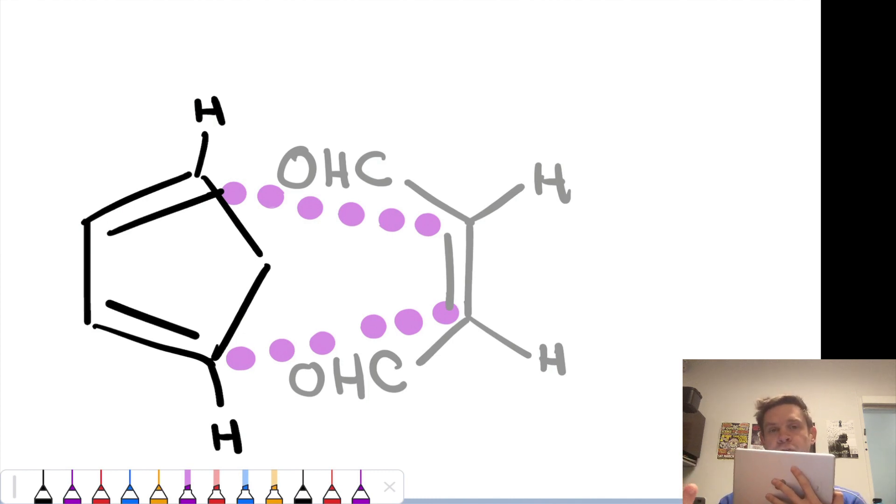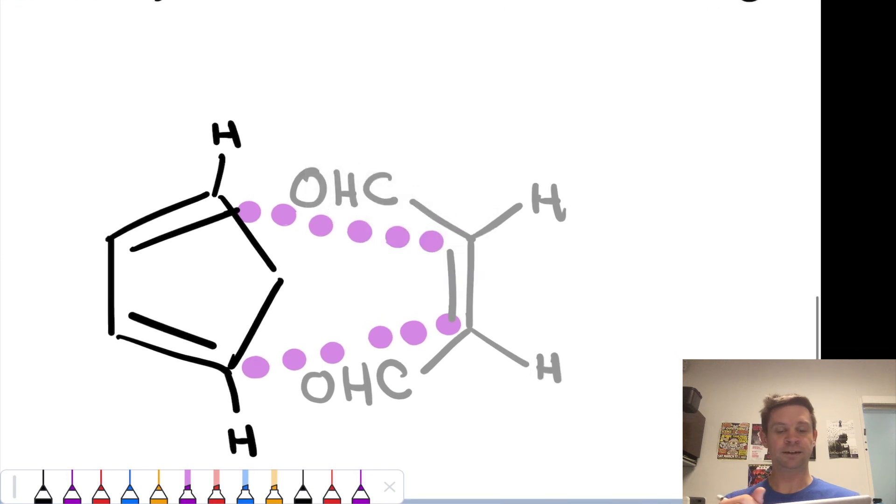So the two reactants are approaching one another in parallel planes with the dienophile further back and the diene further up close. This is called the endo transition state because these substituents, the aldehyde groups, are pointed underneath the diene.